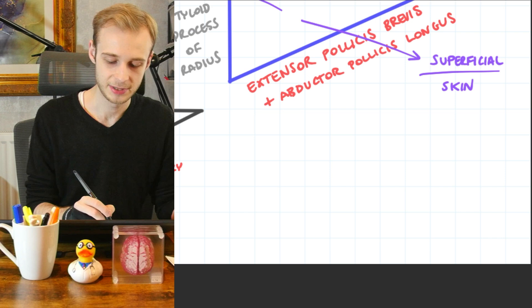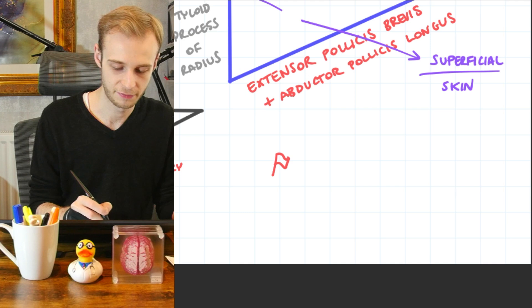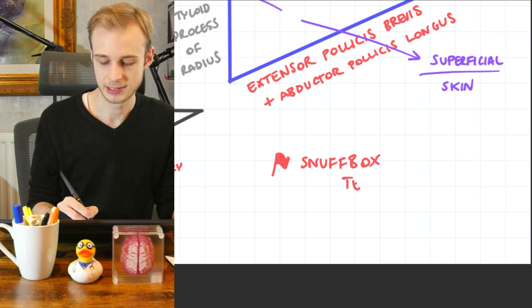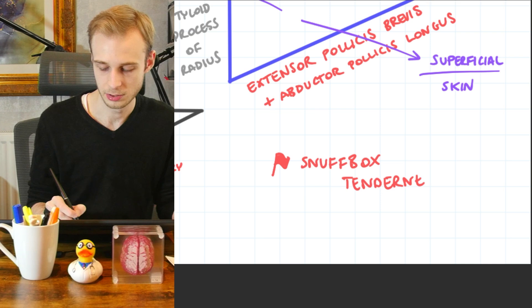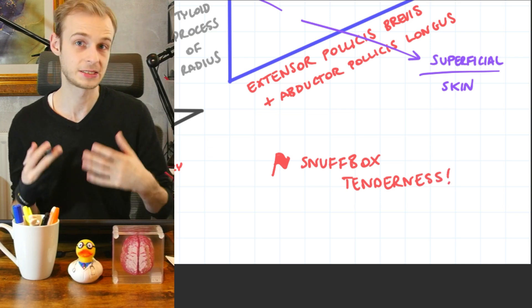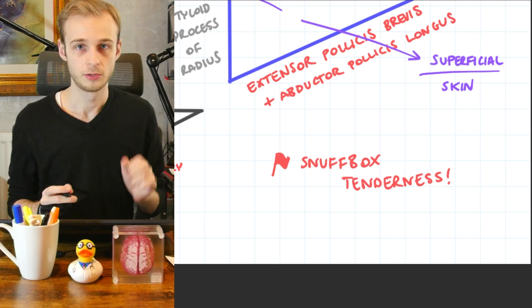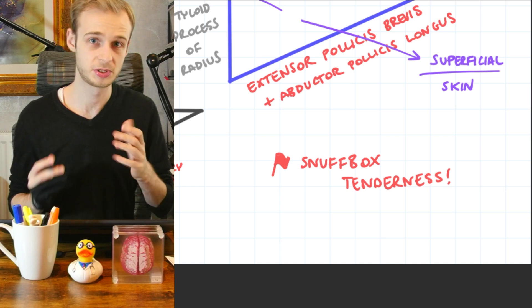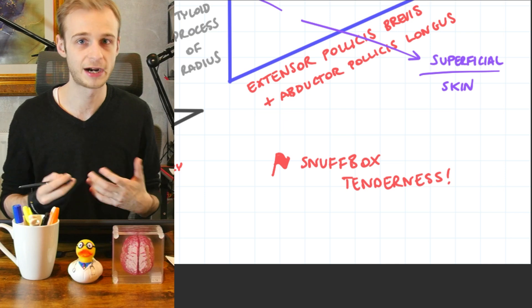And then the very last thing to be said, because obviously we try and keep this clinical where we can, we've got a bit of a red flag sign that I'm going to draw in, is snuffbox tenderness. That is to say, tenderness on palpation to the anatomical snuffbox region. Because what that suggests, or what it can suggest, is a scaphoid bone fracture. When someone falls on an outstretched hand, what you sometimes see referred to as a FOOSH, the force that this puts through the carpal bones can cause a scaphoid bone fracture.